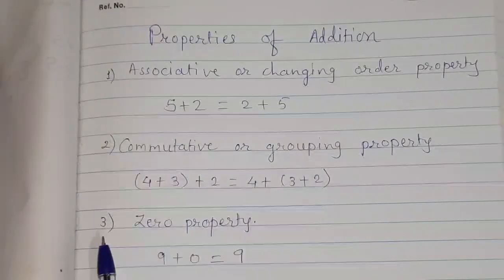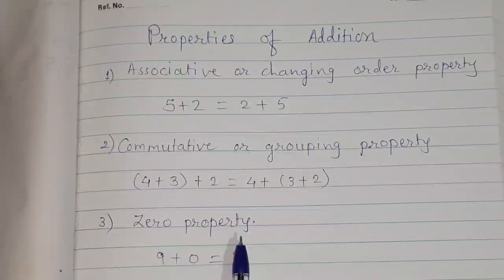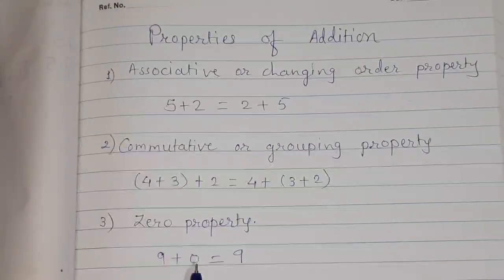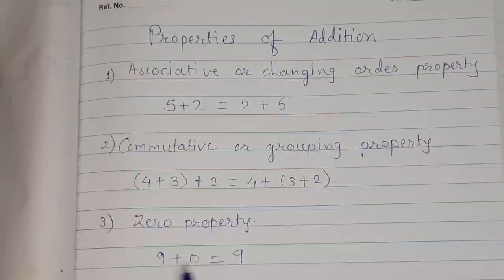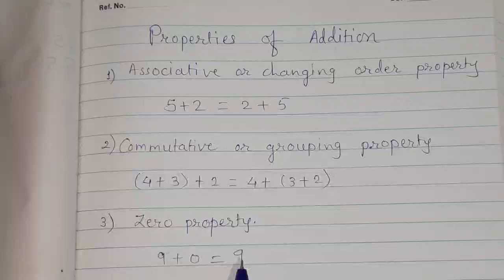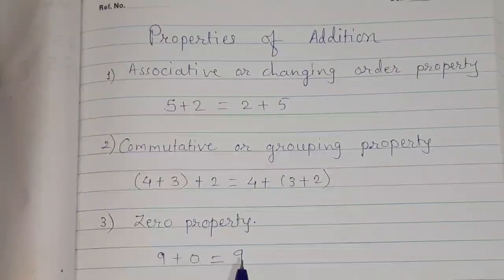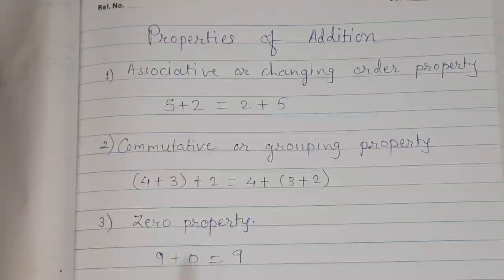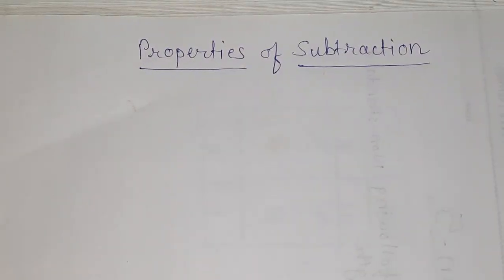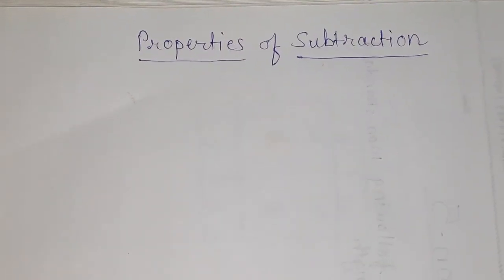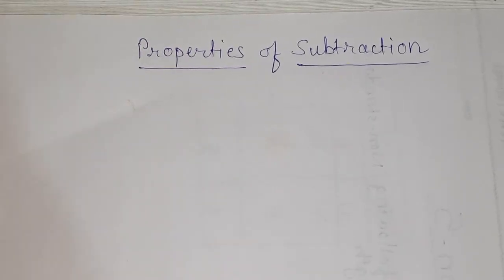Next property we have learned, zero property. Means, we are adding zero number in any number. We are getting this number itself as an answer. So, same way, we are learning about properties of subtraction. In properties of subtraction, we are going to see two types of properties.